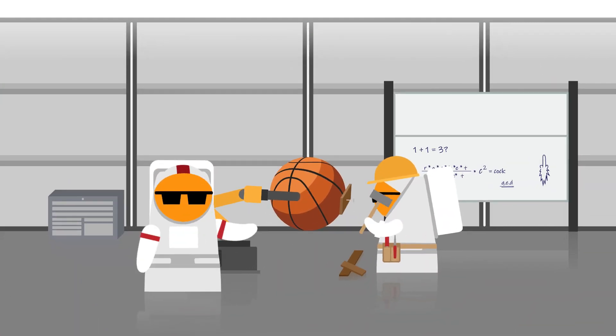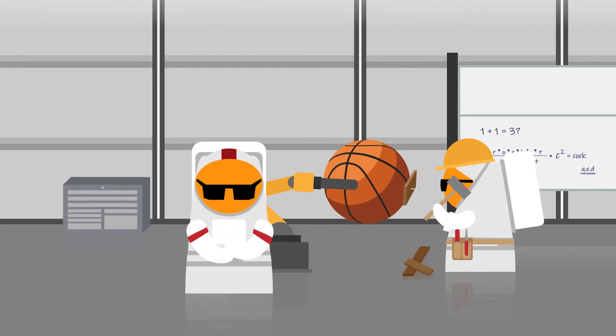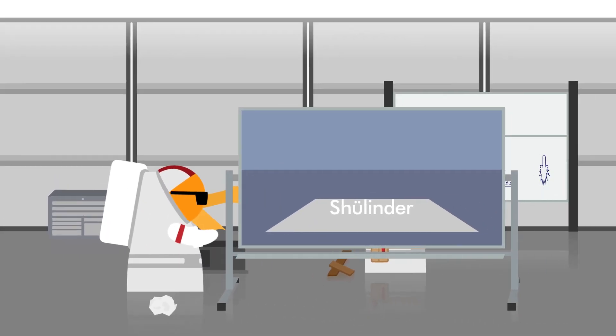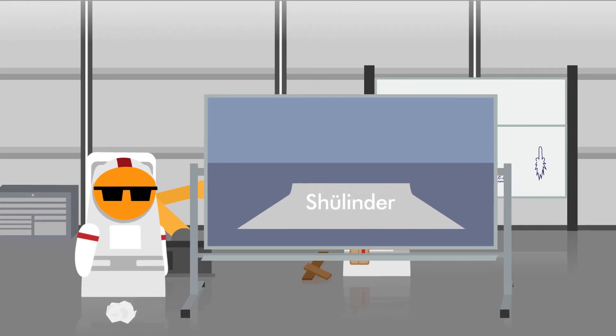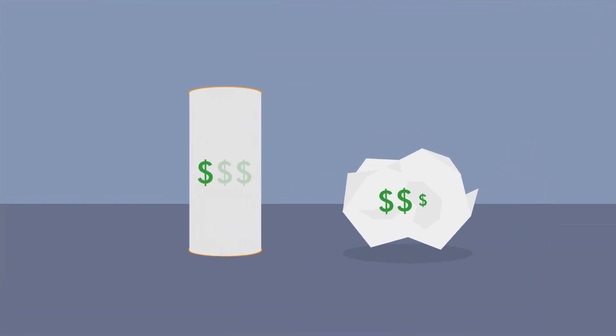Balls are shitty to manufacture. Just take a piece of paper and try folding it into a hollow ball. It's not fun. Manufacturing a cylinder on the other hand is pretty easy. Once the piece is folded, you slap some caps at the end and you are golden.